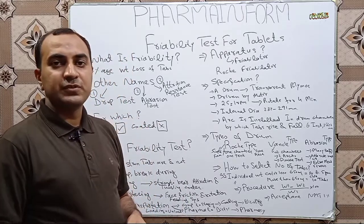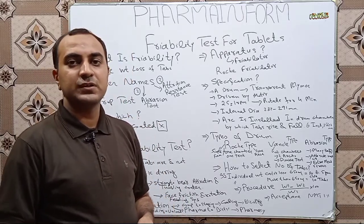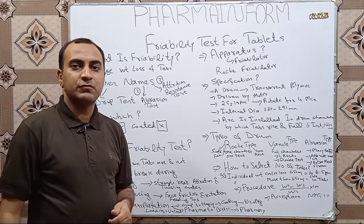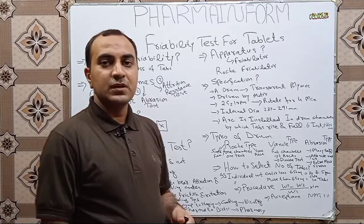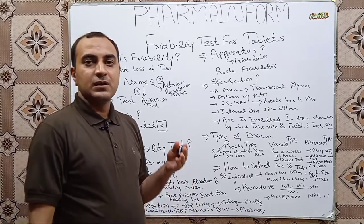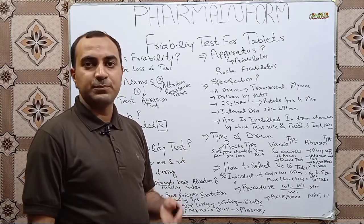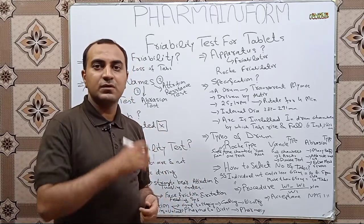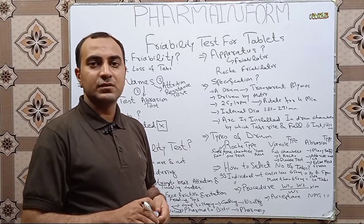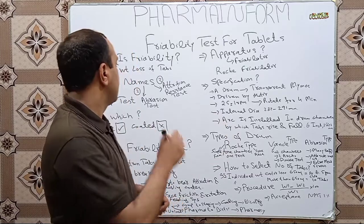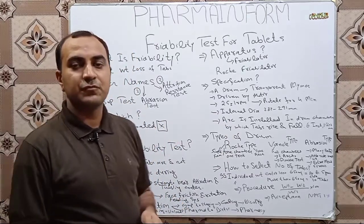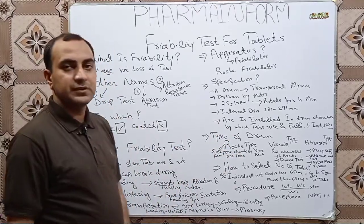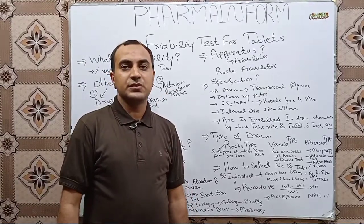What is friability? Friability is defined as the percentage weight loss of tablets. In simple words, the weight loss of tablets by chipping, capping, or the effect of attrition resistance during the friability test is known as friability. The other names used for the friability test are the drop test, abrasion test, and attrition resistance test.